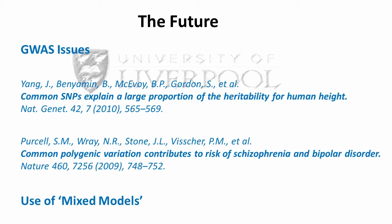The paper by Yang on common SNPs explaining a large proportion of heritability for human height suggests that missing heritability is due to common variants contributing more to traits than associated variants — i.e., many variants spread through the genome each having small effects, rather than a few specific variants having large effects. The paper by Purcell on common polygenic variation contributing to risk of schizophrenia and bipolar disorder shows that if the significance threshold is reduced and variants with weaker effects are included, the predictive model shows better performance. However, this is analogous to overfitting in machine learning. Mixed models — statistical models containing both fixed and random effects — are the future in determining traits from genome information.